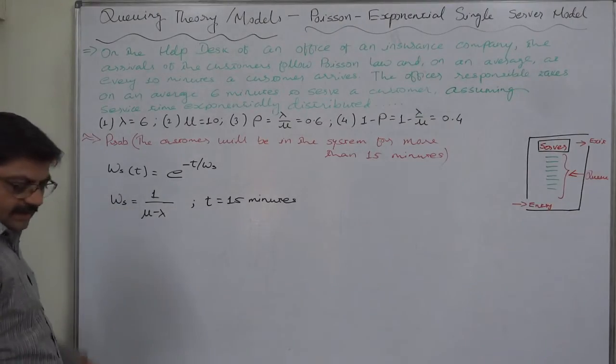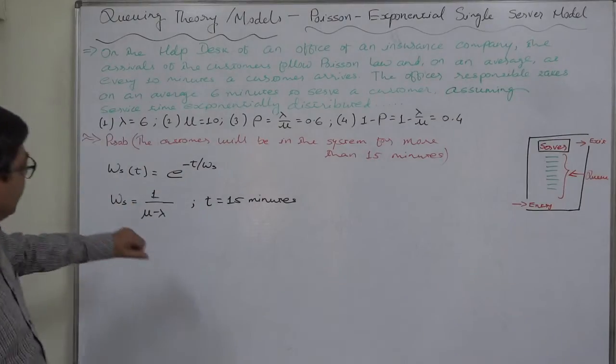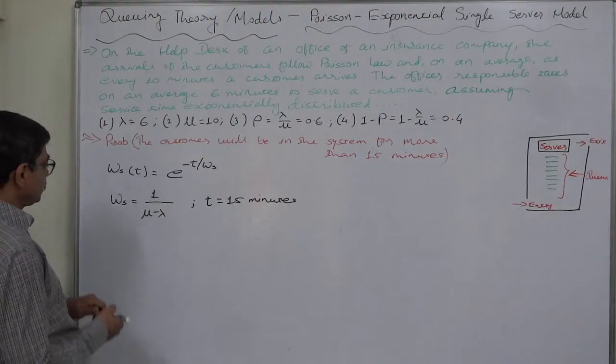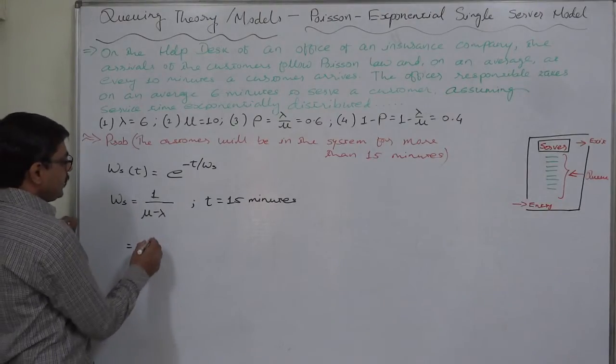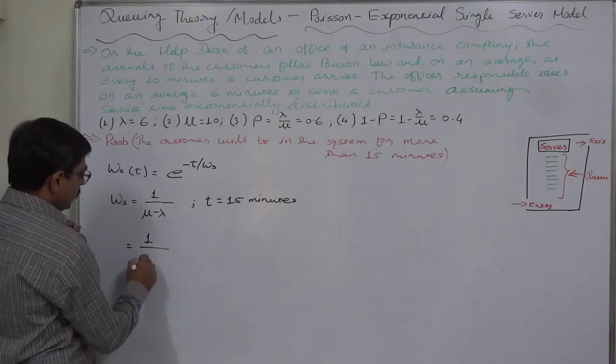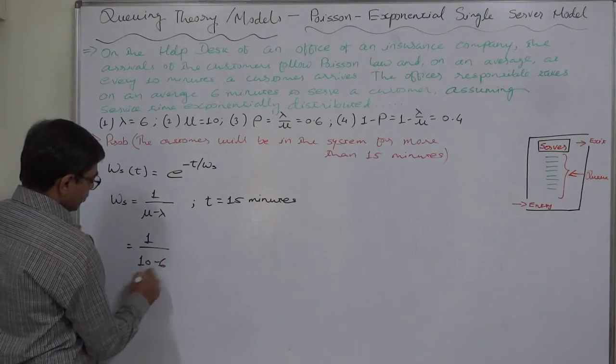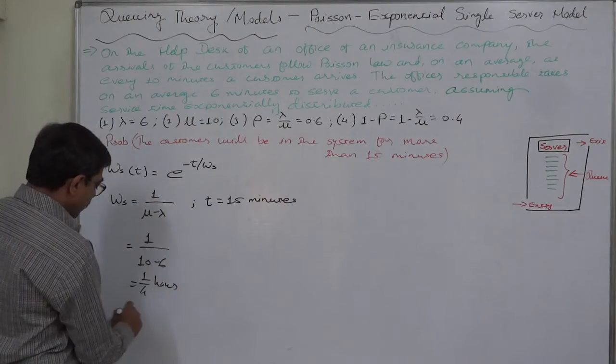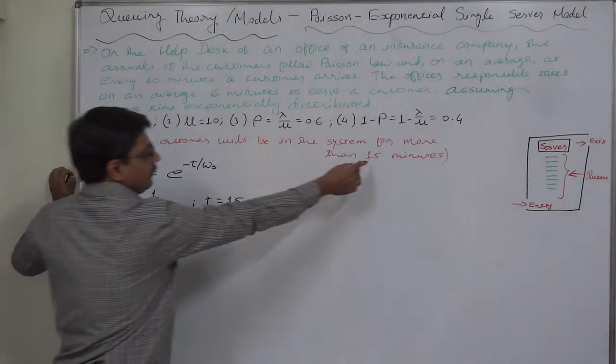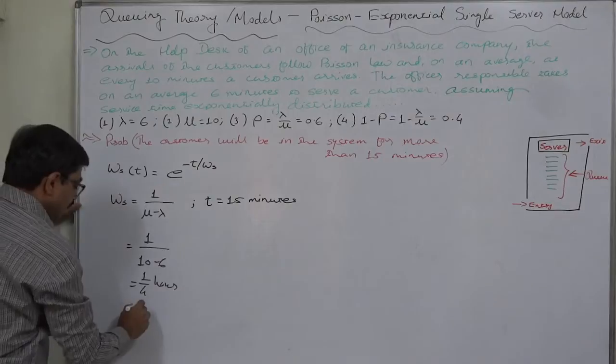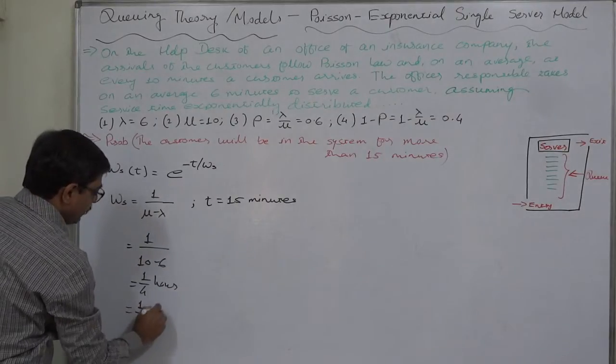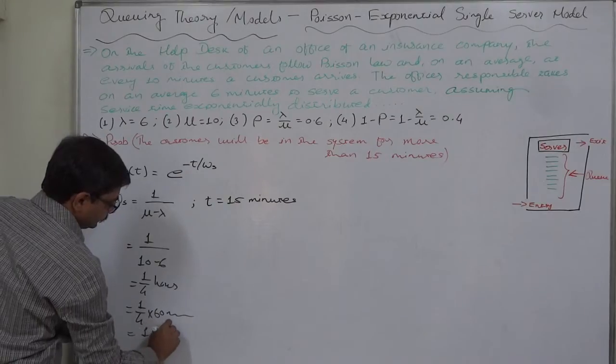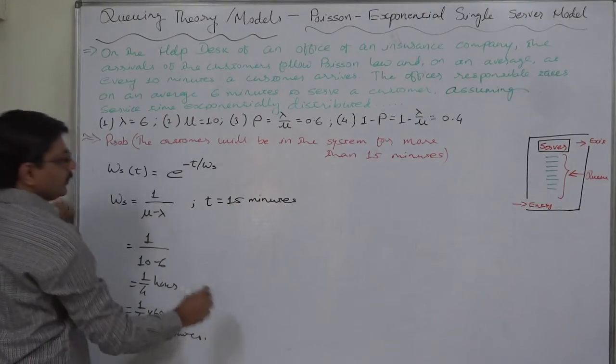As usual, first we have to find out WS for this purpose. Waiting time in the system, the formula is 1 upon mu minus lambda. 1 upon 10 minus 6, that is one-fourth. We have to convert it into minutes because time unit is 15 minutes in this case. So one-fourth of 60 minutes, that is 15 minutes.